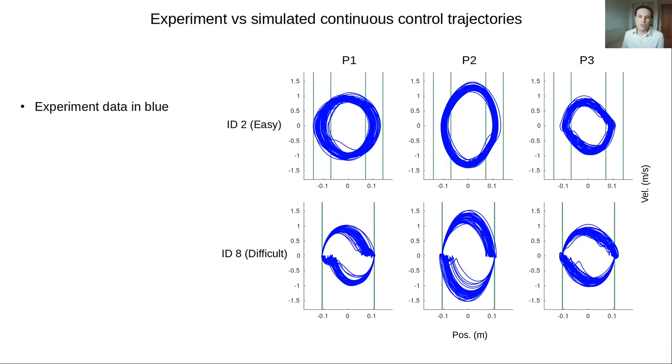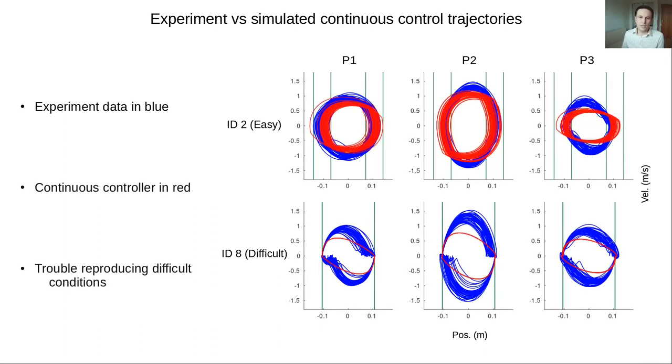The continuous control response is now overlapped and shown in red. We can see that the simulated trajectories do not capture the experimental variability of the difficult condition, nor the sub-movements as the pointer approaches the target.